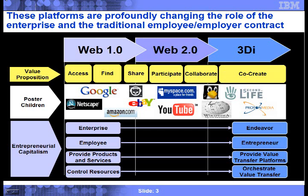As we think about these new platforms, from a demographic perspective, young people today no longer have affinity for the enterprise — they have affinity for the endeavor, and where they happen to work is more a function of being able to engage in the endeavor they're interested in. Employees today tend to want to be more entrepreneurial, and organizations are looking for growth, which comes from providing value on top of transfer platforms.